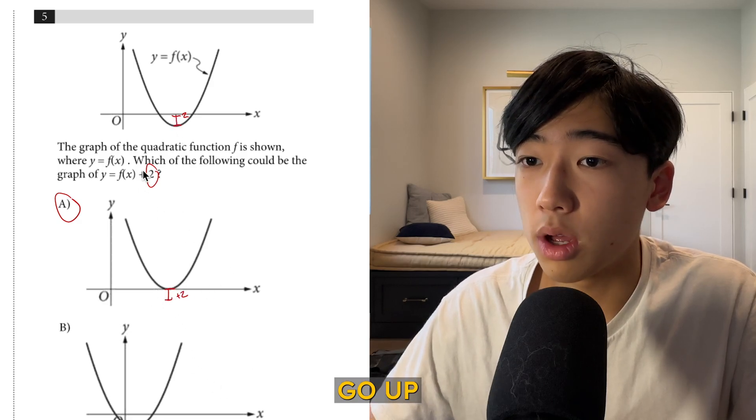Now for number 5, we can see that we're given the graph of f of X, and we have to find the graph of f of X plus 2. So when it says plus 2, what you should be remembering is that whenever you have a value of f of X, the new graph should be 2 more than that value, or should be shifted upwards 2 units. So for example here, it goes up by 2, and all these other points go up. Since we're only looking for vertical transformations, the answer is A.